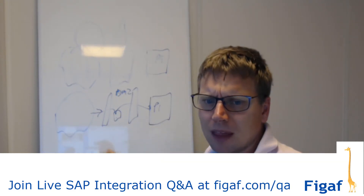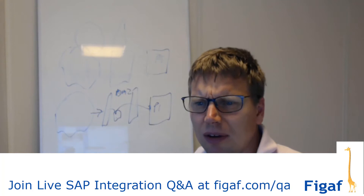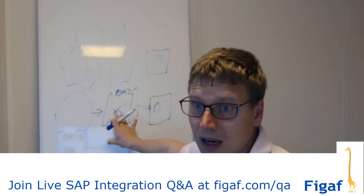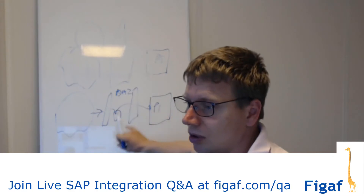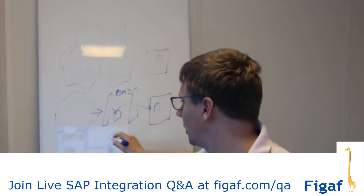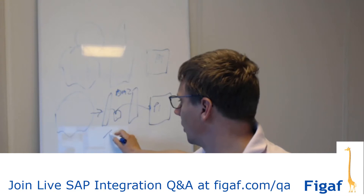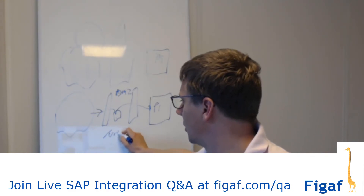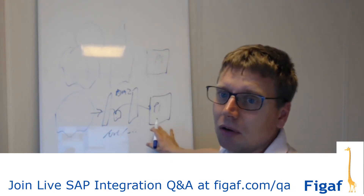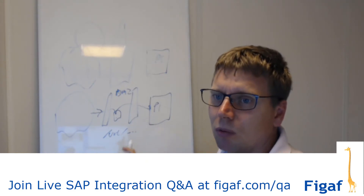I created a blog some time ago where I was talking about this concept and exposing part of the PI system externally. In the Web Dispatcher, you can just say this URL is OK and allow it through — all the other ones you don't want.